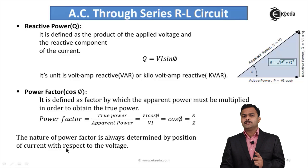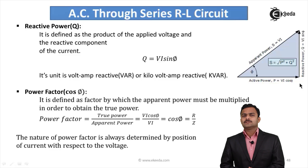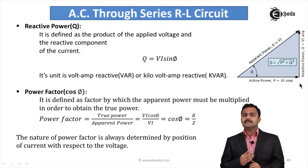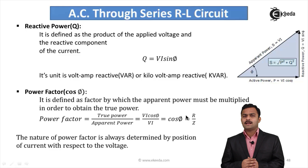Along with the magnitude of power factor, we must specify its nature, which is determined by the position of current with respect to voltage. For a series RL (inductive) circuit, current lags voltage by angle φ. Although cosφ is positive for both positive and negative angles, the nature is specified as lagging because current lags voltage. Therefore, for an inductive circuit, the power factor is cosφ lagging.